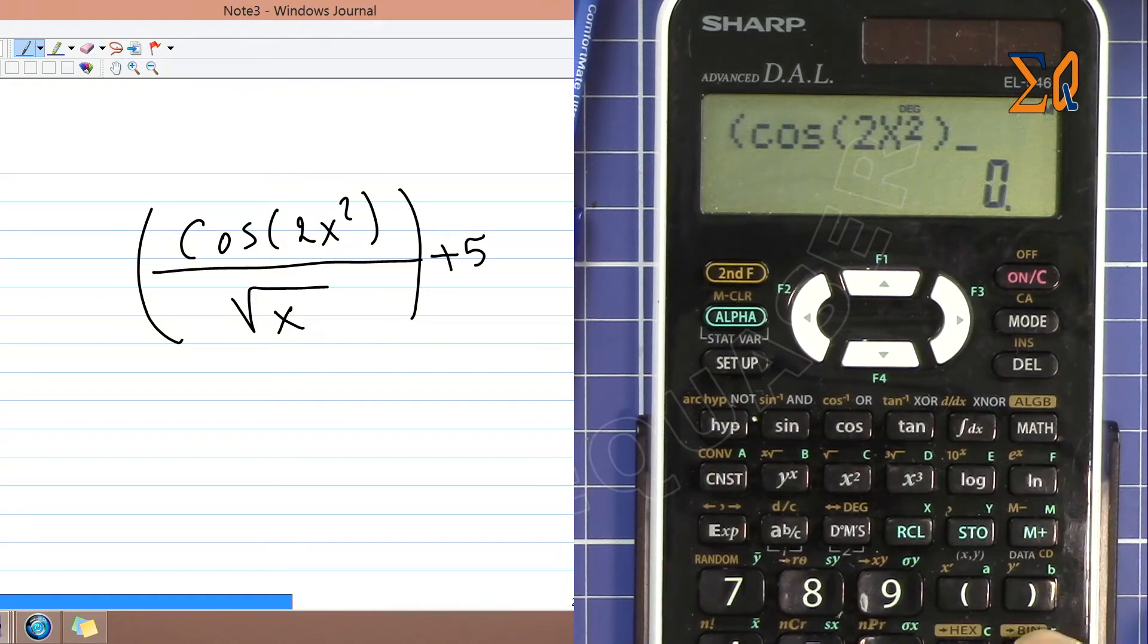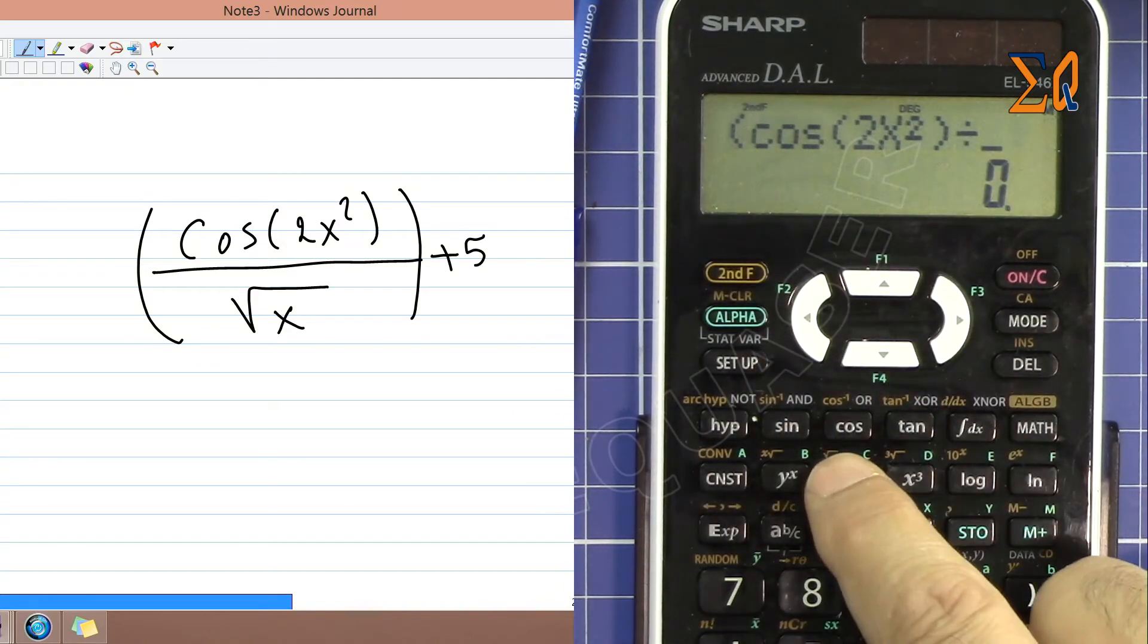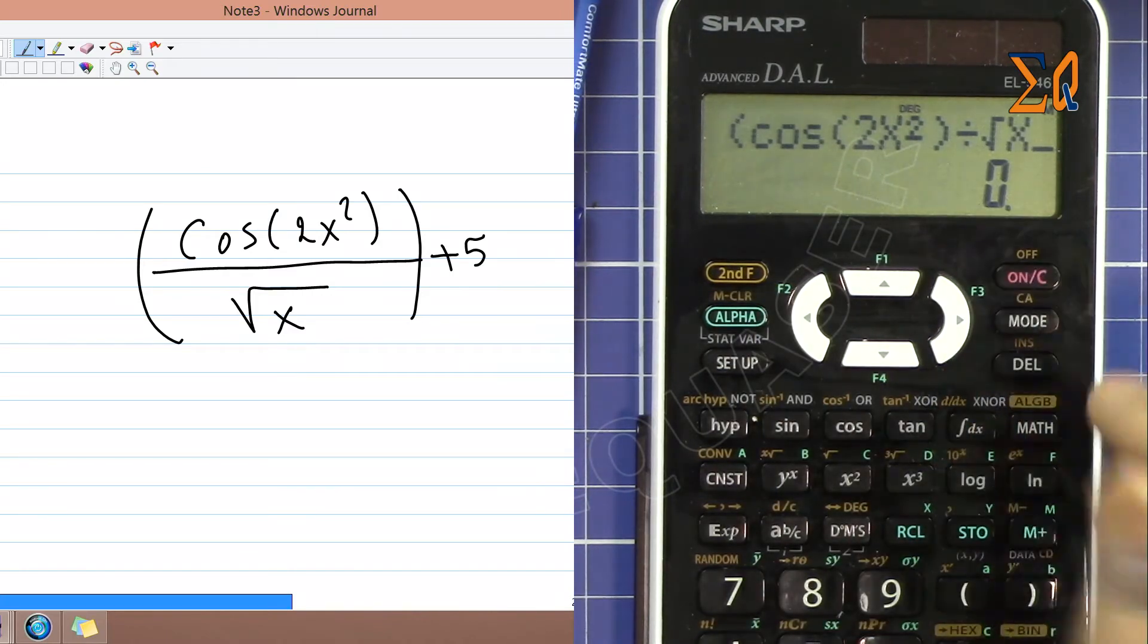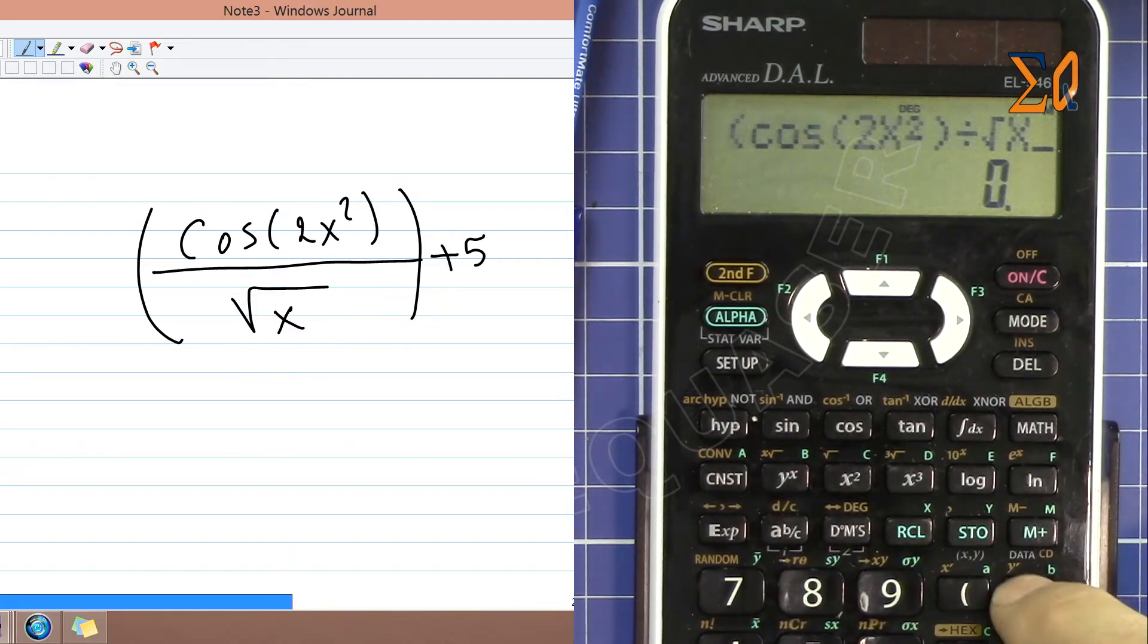That's for that parenthesis. Divided by, can function, shift square root of alpha X. Now this parenthesis should be closed. I'm closing it.